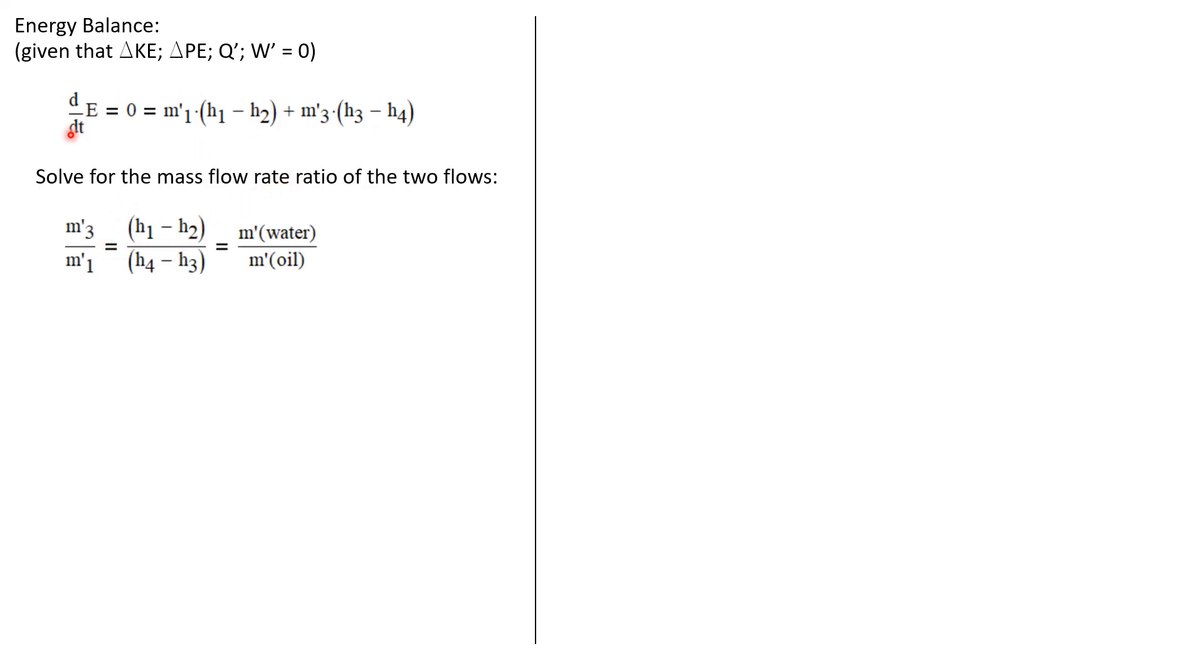So let's rewrite this energy balance as a mass flow rate ratio. We can say that mass flow rate of state three, which is the water, divided by the mass flow rate at state one, which is the oil, is just (h₁ - h₂) over (h₄ - h₃). All we did was rearrange the energy balance.